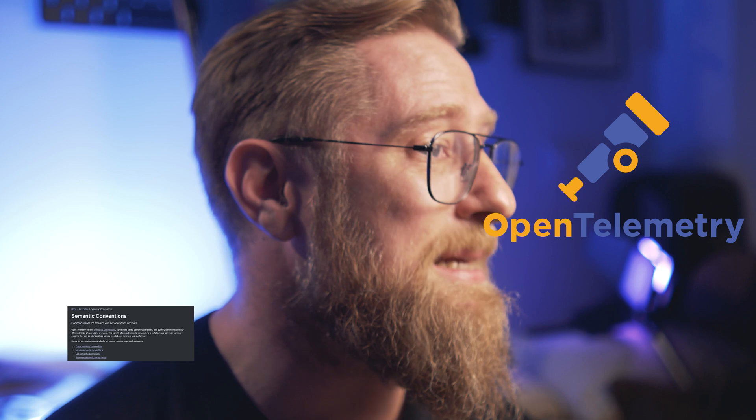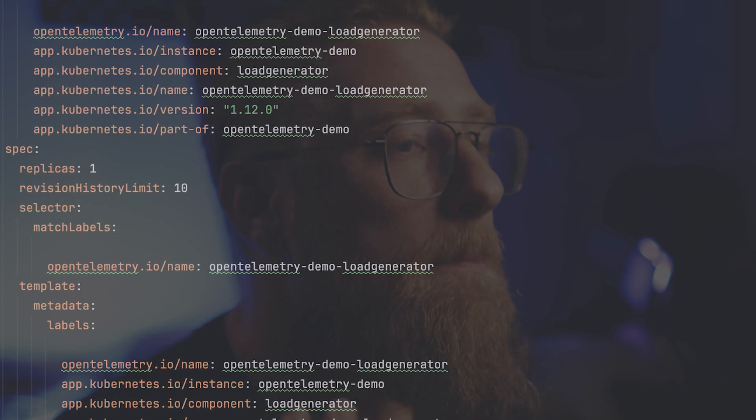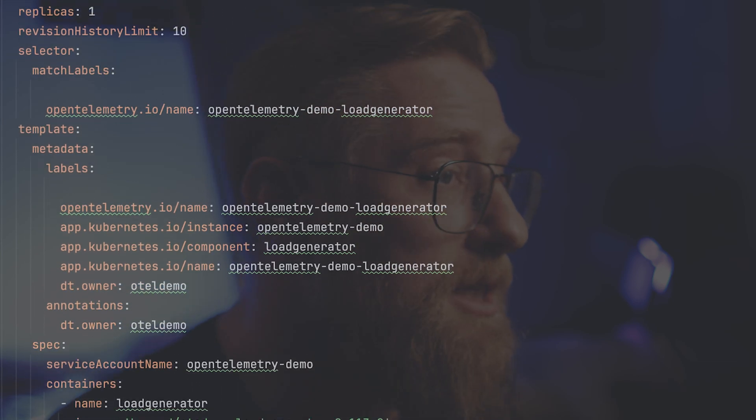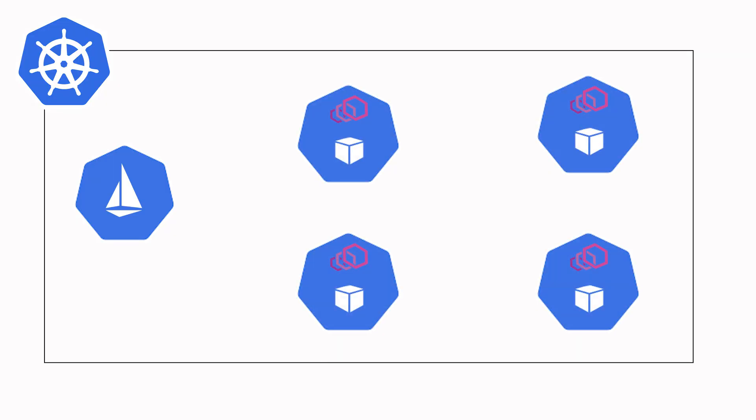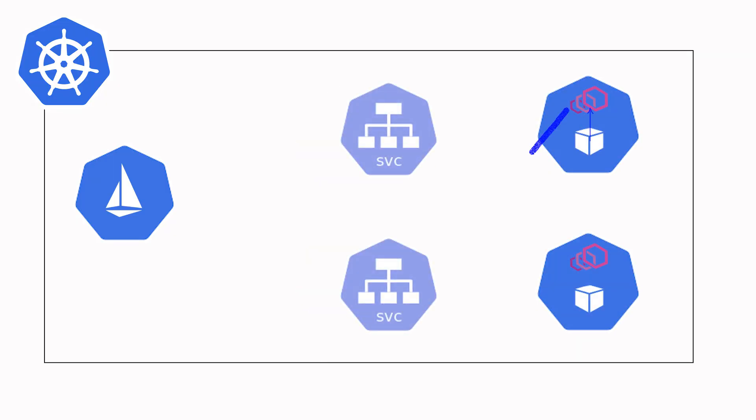Thanks to OpenTelemetry and its semantic conventions, we can now add standardized metadata to our logs, making them way easier to manage. And if you're working in a Kubernetes environment, it gets even better with standardized Kubernetes metadata. Let's get back to Envoy logs. When you use Istio in sidecar mode, each pod gets a sidecar proxy — the Envoy proxy — which handles all the traffic based on Istio rules and produces logs for every incoming and outgoing request.